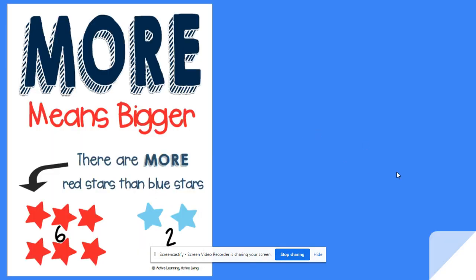So first, let's talk about the word more. More means bigger. So in our picture here, there are more red stars than blue stars, and I can find that out by counting them.